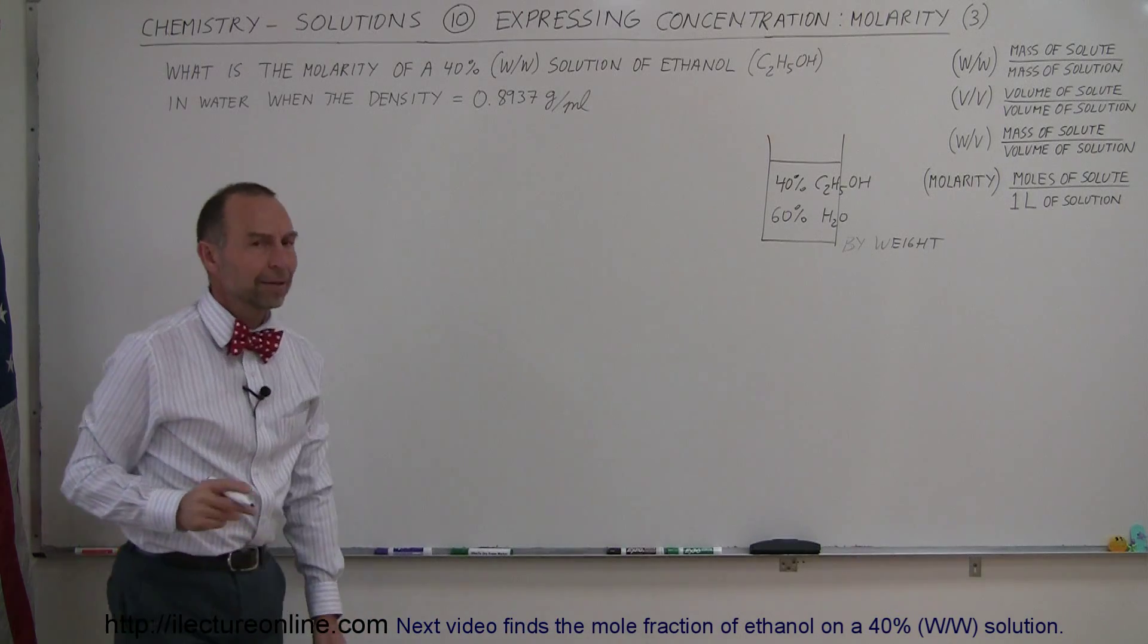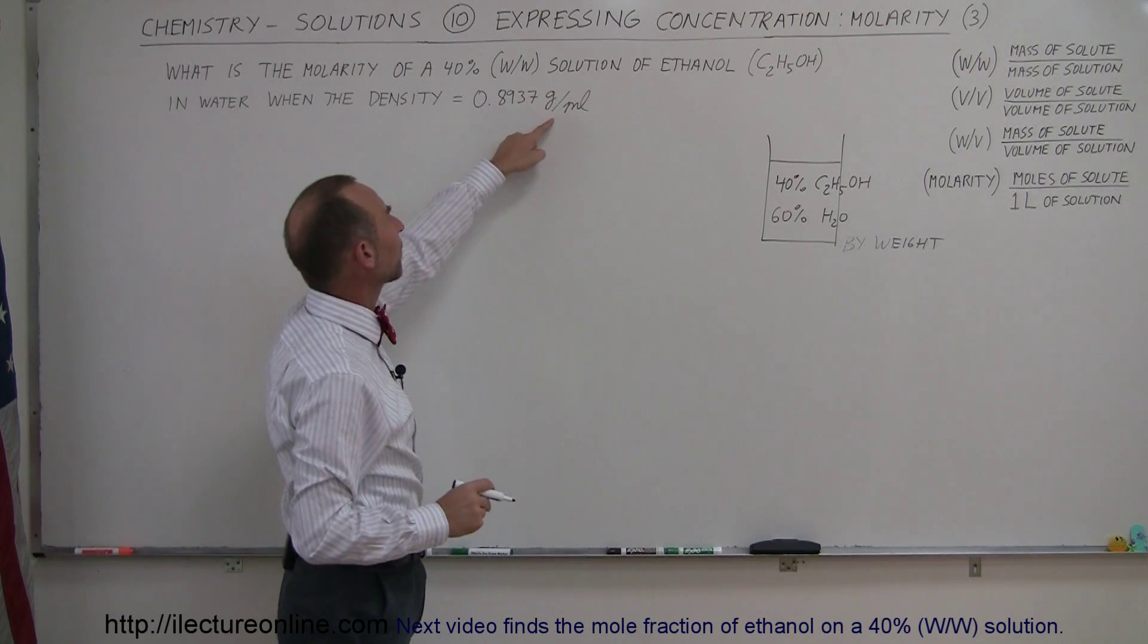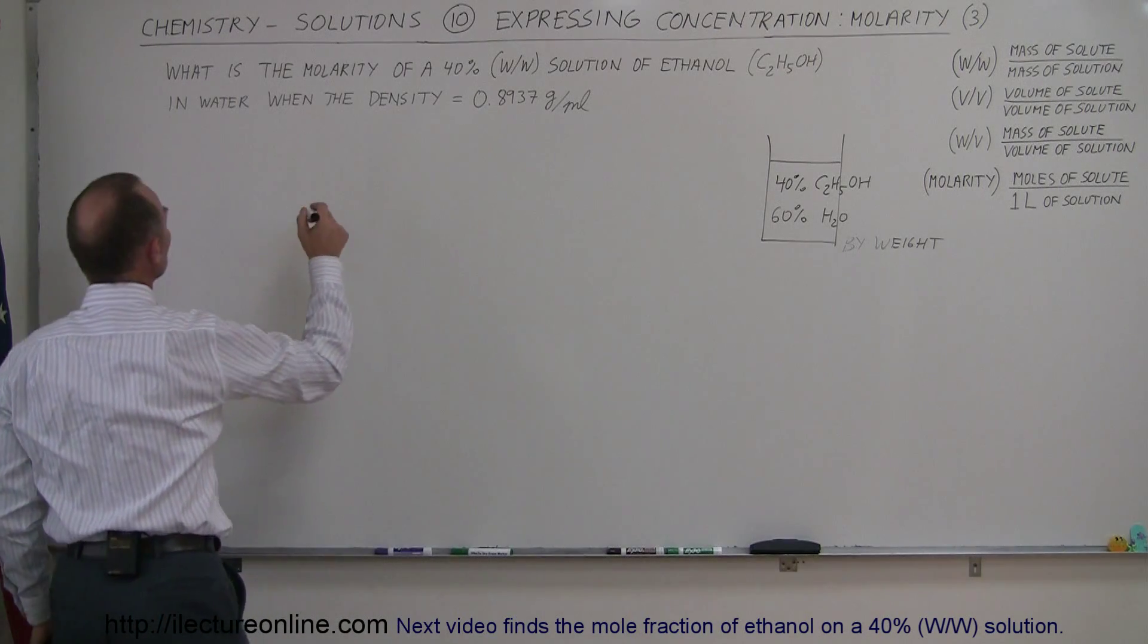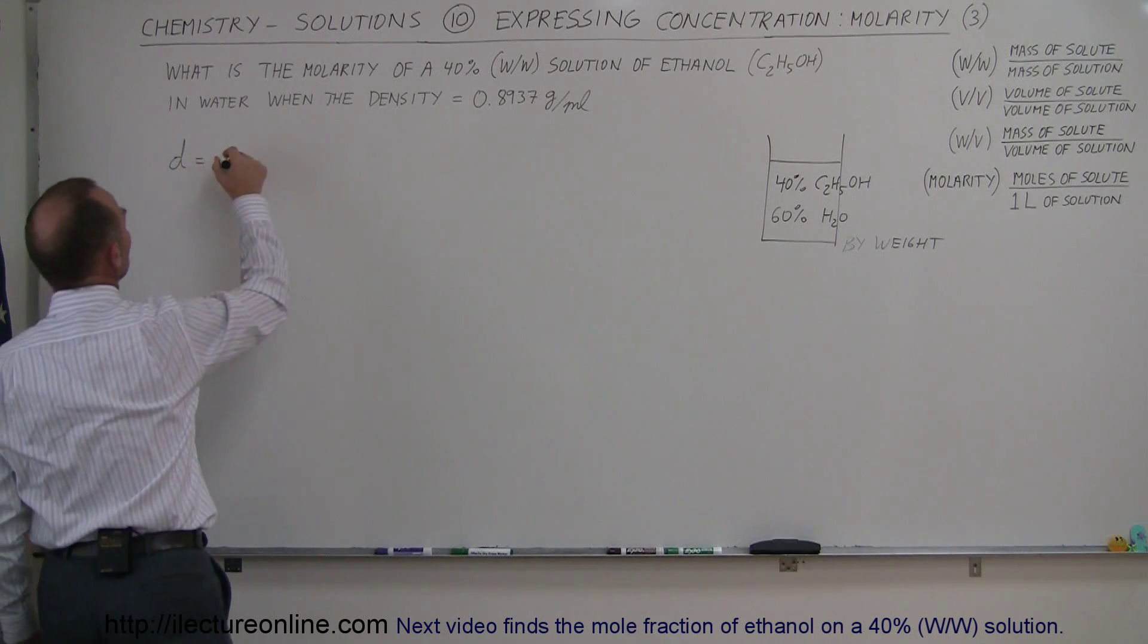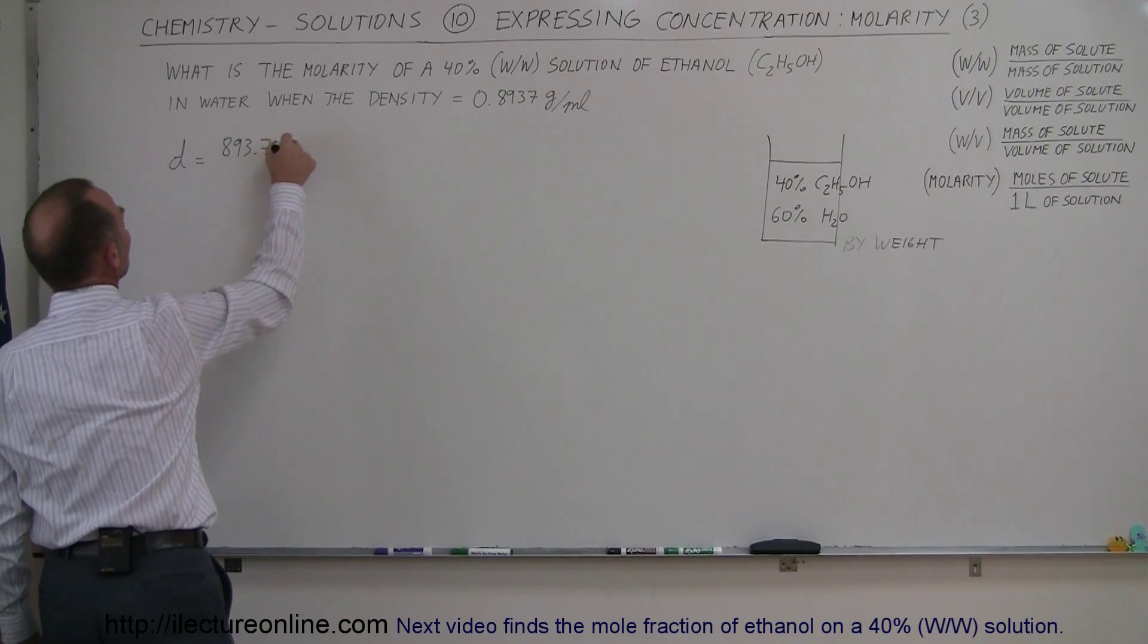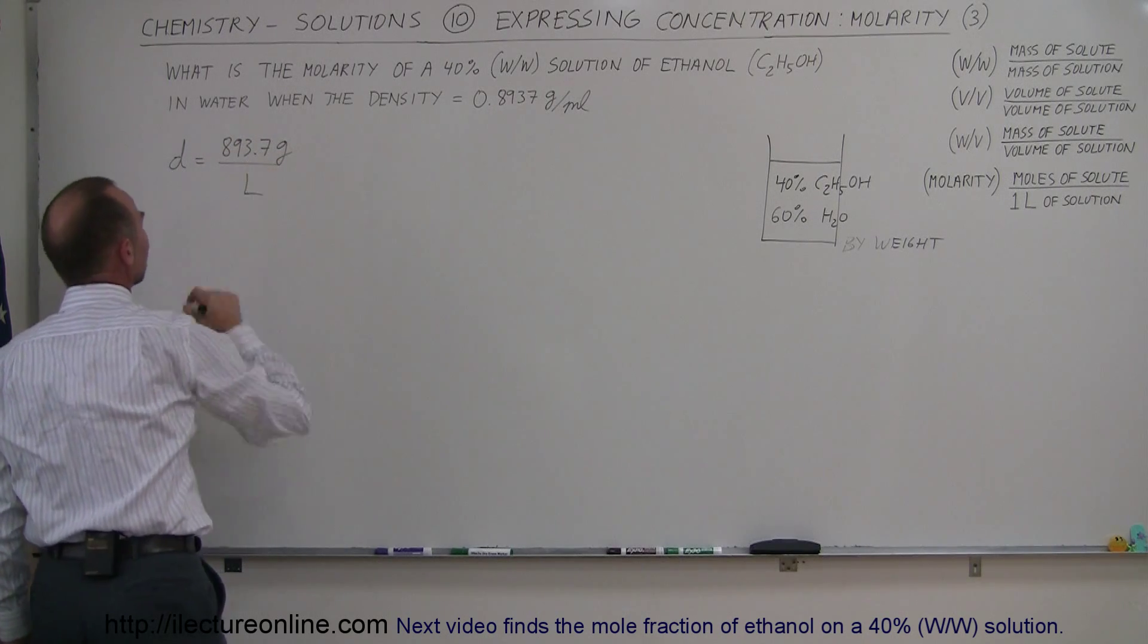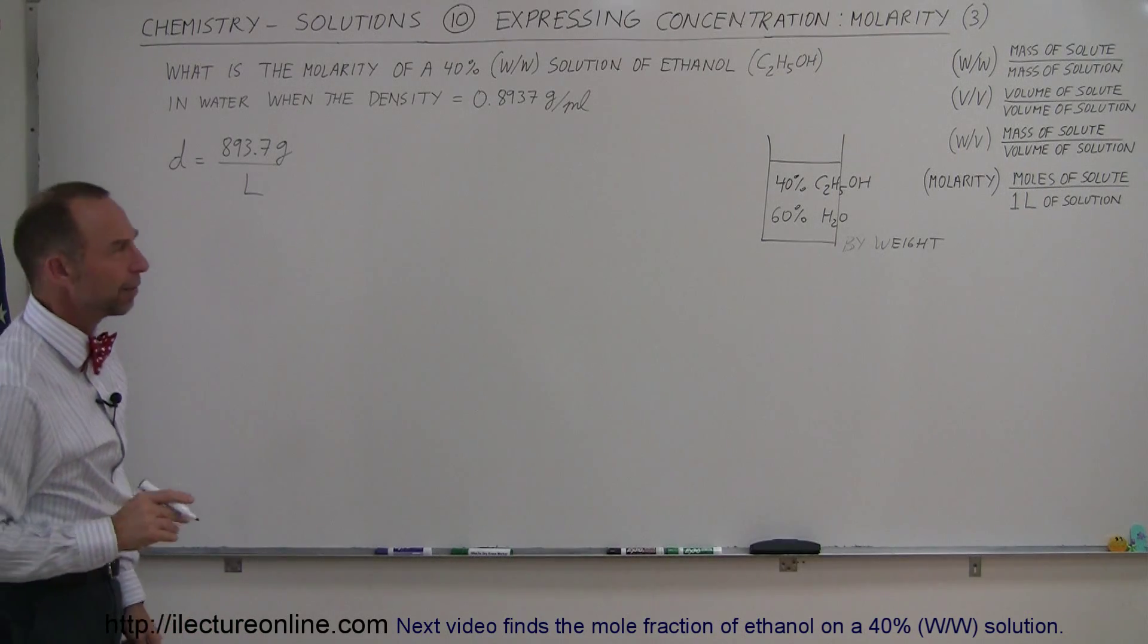Okay, secondly they give us a density. They tell us that the density is 0.8937 grams per milliliter. We use the letter D for density. Density therefore is equal to 893.7 grams per liter. Now that's an important number. If we didn't have the density of liquid we couldn't figure out the problem.